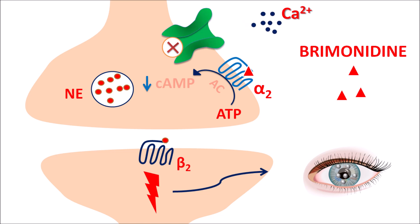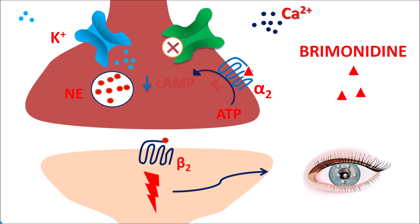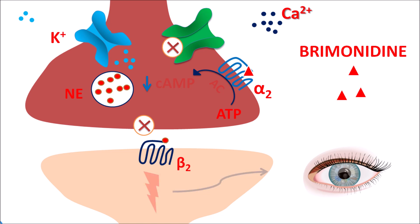In the absence of cyclic AMP, calcium channels cannot work properly, so calcium cannot enter the presynaptic neurons and cannot produce exocytosis. At the same time, potassium channels are activated, so potassium goes outside, resulting in hyperpolarization of the presynaptic neurons. In this way, presynaptic neurons are inhibited, resulting in decreased release of norepinephrine. With norepinephrine not released, beta-2 receptors are not stimulated, leading to decreased production of aqueous humor, and with improved drainage, intraocular pressure is reduced.